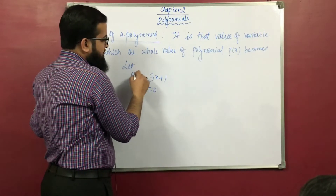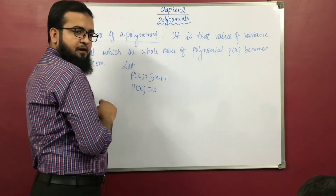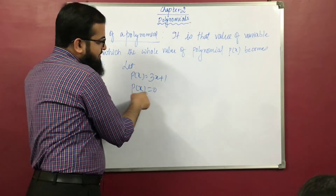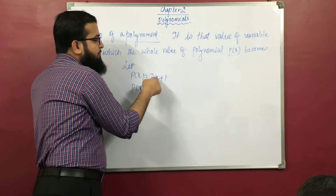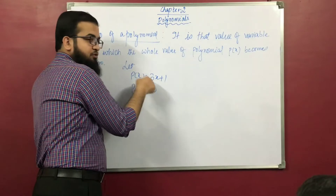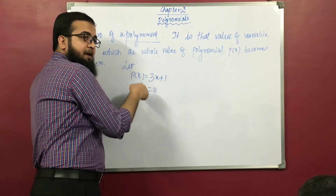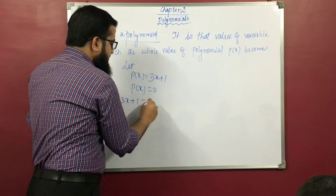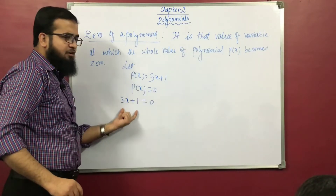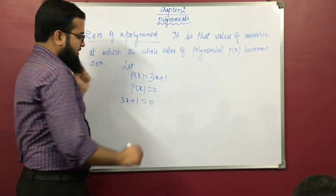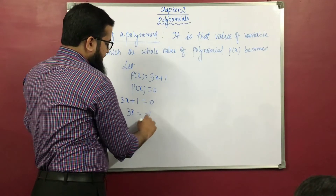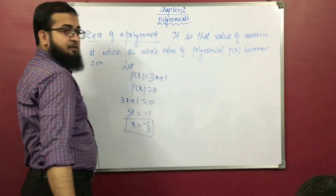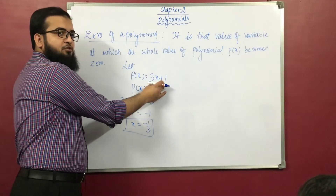Let this be px. Now px is equal to 0. If we have to find out the value of x at which it becomes 0, then we take px equal to 0 and find out x. So we get 3x is equal to minus 1, and x is equal to minus 1 upon 3.